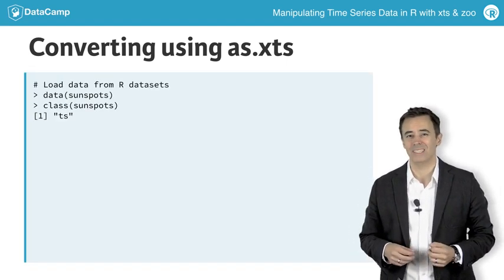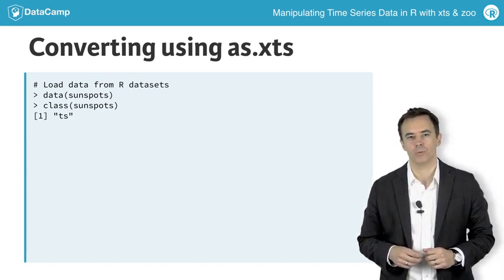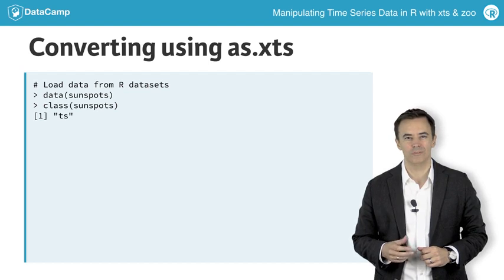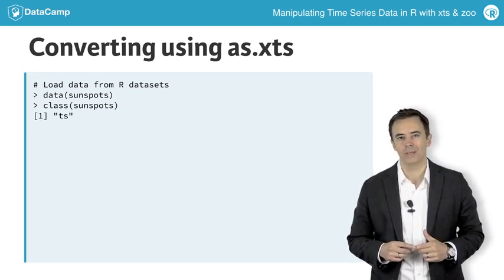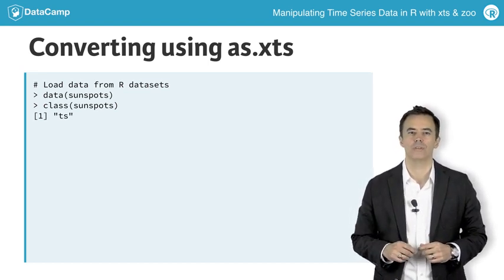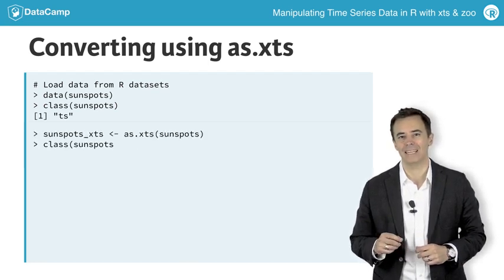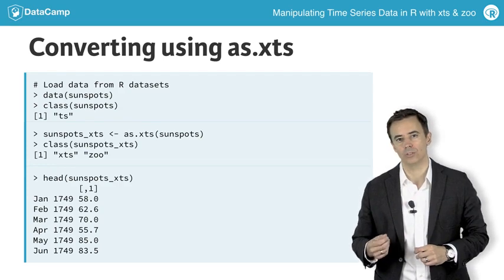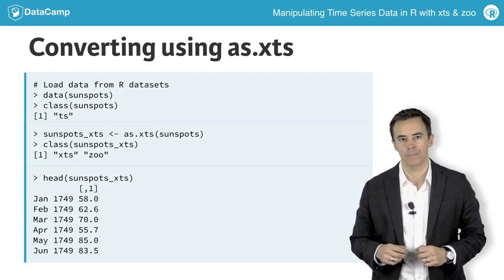To illustrate how easy this is, we'll use the famous sunspots data that ships with R. Sunspots is a TS object, which is fairly challenging to work with as it is regular — i.e. fixed intervals — but it is less intuitive in its structure. To convert, we only need to use as.xts, and you see the series now is well-structured and looks like you might expect a time series to look.